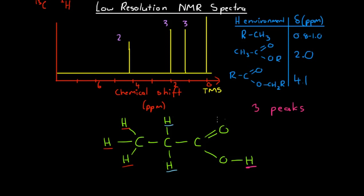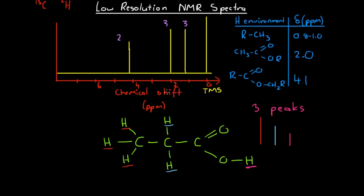What will their relative heights be? Well, we've got 3 hydrogens in the first environment, 2 in the second, and 1 in the last. So we're going to have peaks of relative sizes 3, 2, and 1. If we wanted to look at this molecule and say what our spectra is going to look like, we can say we're going to have 3 peaks: one of relative height 3, one of relative height 2, and one of relative height 1. So it's not only chemical shift data that's very important to help us analyse low-resolution NMR spectra, but also the height of our peaks. In another video, we'll look at high-resolution spectra and how other factors come into play in helping us analyse these substances.